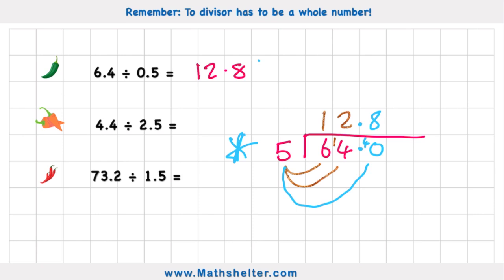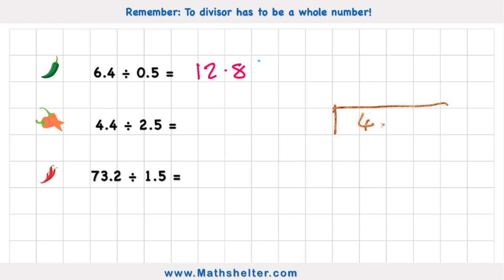Lovely. Let's step it up. And now let's look at an orange chili challenge which is 4.4 divided by 2.5. And again the divisor can't be a decimal so I have to turn this 2.5 into a whole number and I can multiply it again by 10 to get to 25.